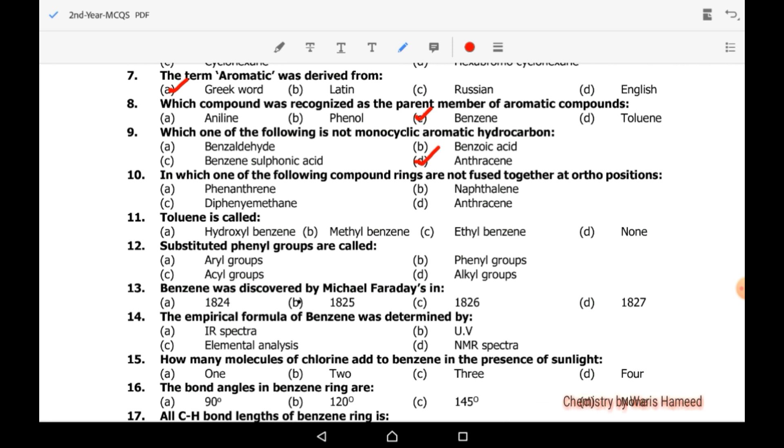In which one of the following compounds are rings not fused together at ortho position? It's diphenyl methane. One carbon is present in the center and two phenyl groups are attached to it. Toluene is called methyl benzene. Substituted phenyl groups are called aryl groups.